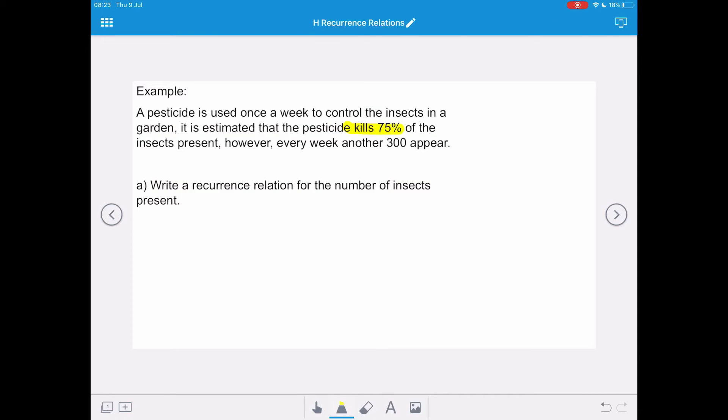We want to write a recurrence relation for the number of insects present. So the pesticide kills 75%, but another 300 appear. So that's going to determine what our a and b values are in our recurrence relation. So un+1 is going to equal aun plus b. a is our common difference. We're going to start off with 100% and take away the 75% because the pesticide is decreasing the number of insects. That leaves us with an a value of 25% or as a decimal 0.25. So un+1 is going to equal 0.25un, and then as another 300 appear, we're going to add on those 300 for our recurrence relation.